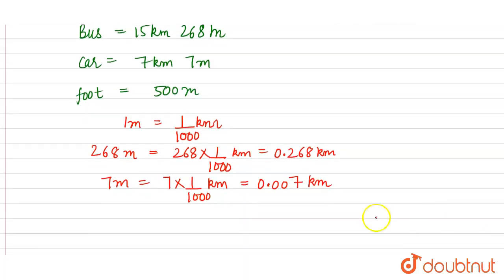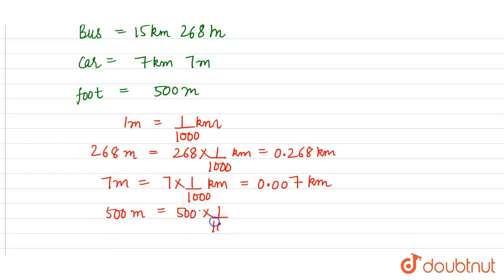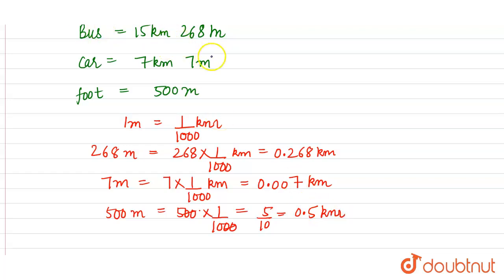500 meters = 500 × (1/1000) kilometers. Two zeros cancel, giving 5/10. There is only one zero, so we place the decimal one digit from the left: 500 meters is equal to 0.5 kilometers.